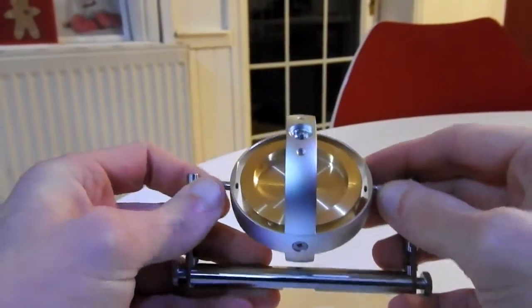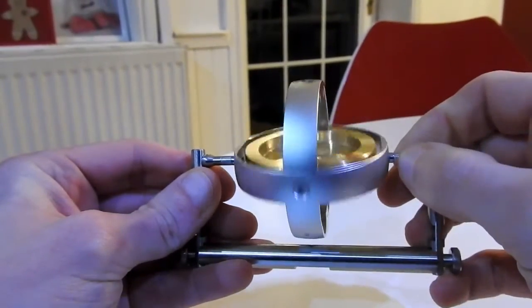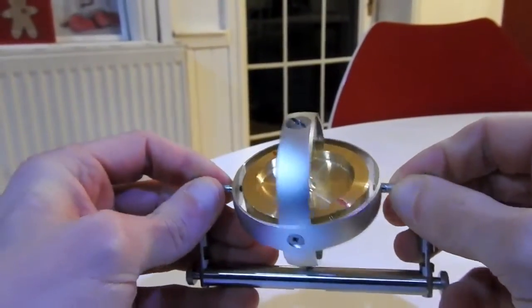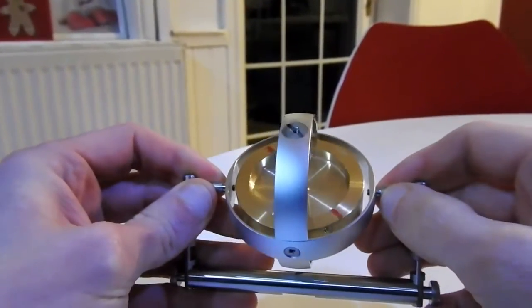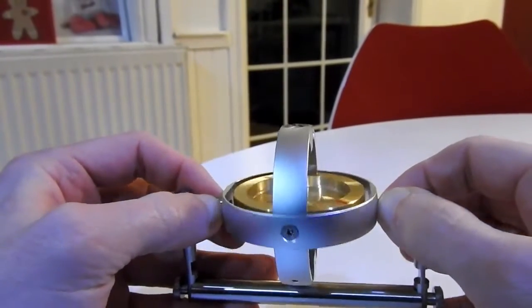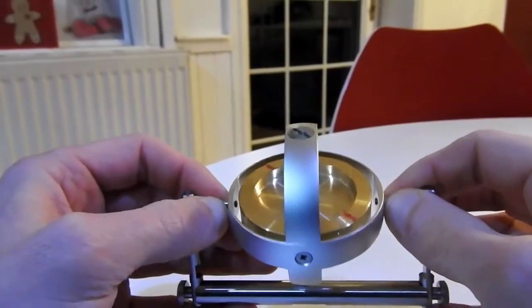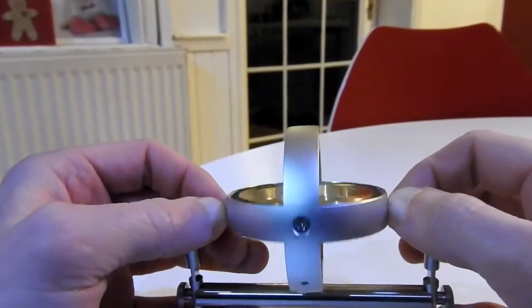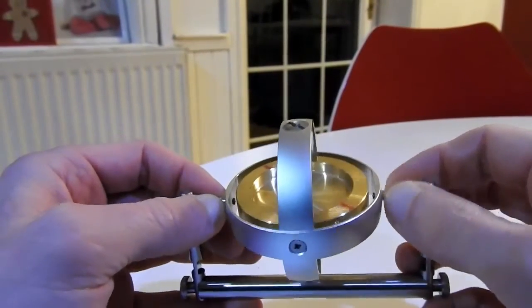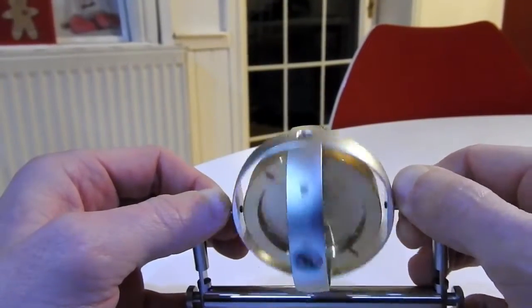And what of the artificial horizon? That's a gyro as well. Why doesn't that need resetting every 15 minutes? Surely that would be subject to the exact same drift as the directional gyro. But it's actually considered bad practice to realign your artificial horizon during flight. Because you don't know whether you're aligning it to a straight and level orientation.